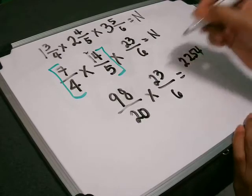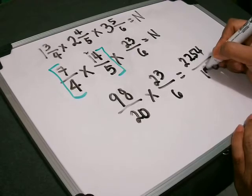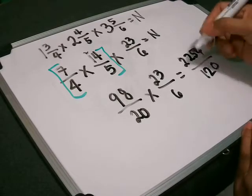20 times 6: 0 times 6 equals 0, 2 times 6 equals 12, so 120. That's your product. This is an improper fraction.